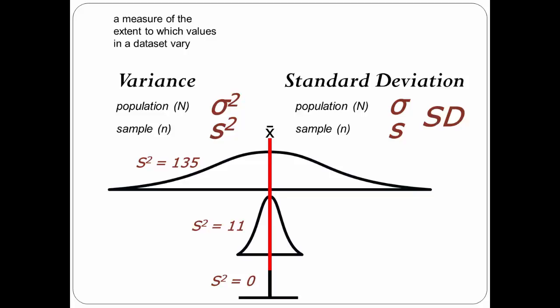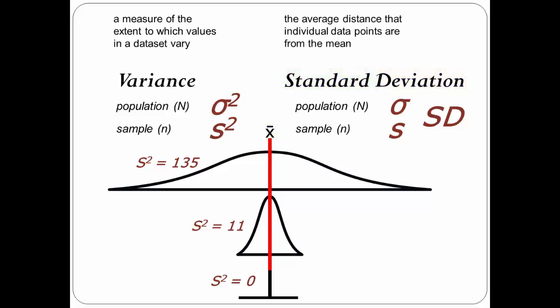Standard deviation is the most frequently used measure of variability. Consider the word choice: a deviation from something that is standard. In this case, the mean is the standard. Standard deviation explains the average distance that individual points are away from the mean. Not surprisingly, as standard deviation is the square root of variance, the larger the spread of numbers, the larger the standard deviation statistic.